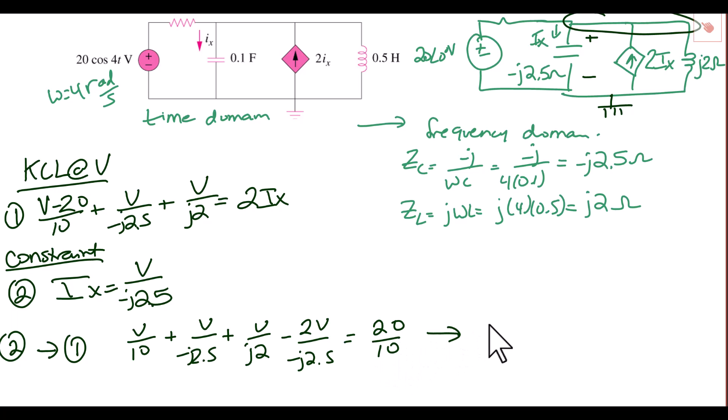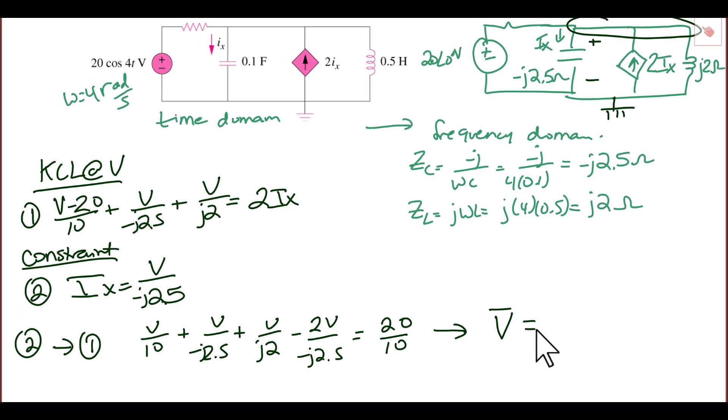And so then when we solve for that node voltage, we get that the node voltage is equal to 2.2 with an angle of 83.65 degrees. In rectangular form we can write that as 0.244 plus J 2.195 volts.